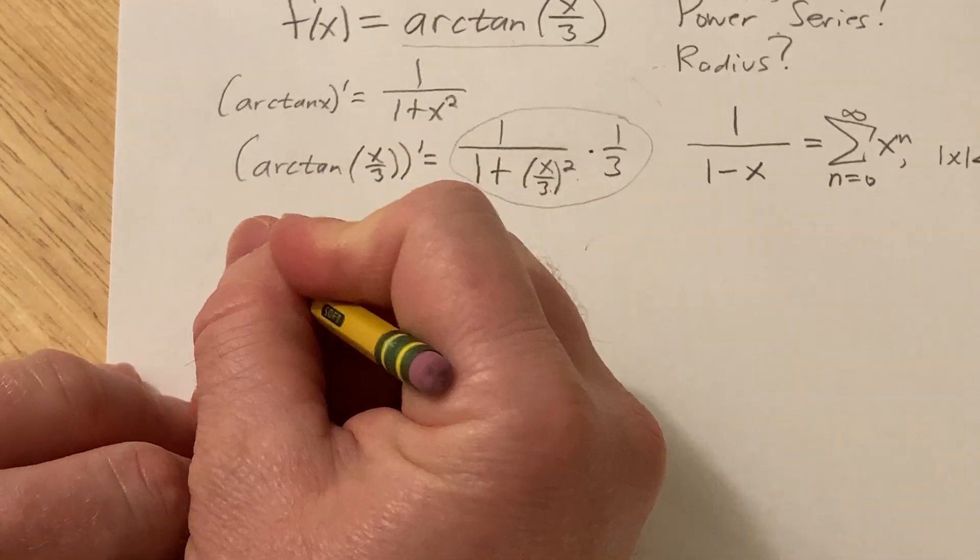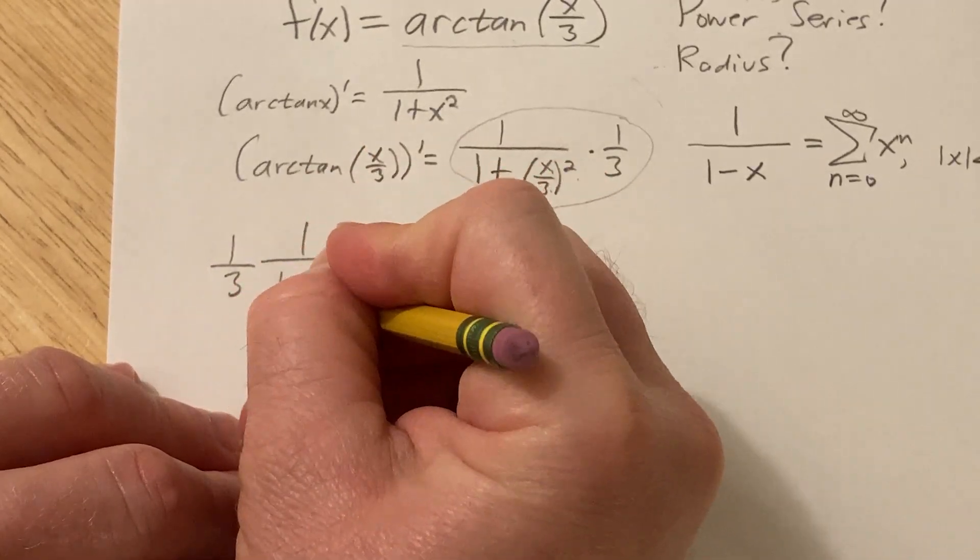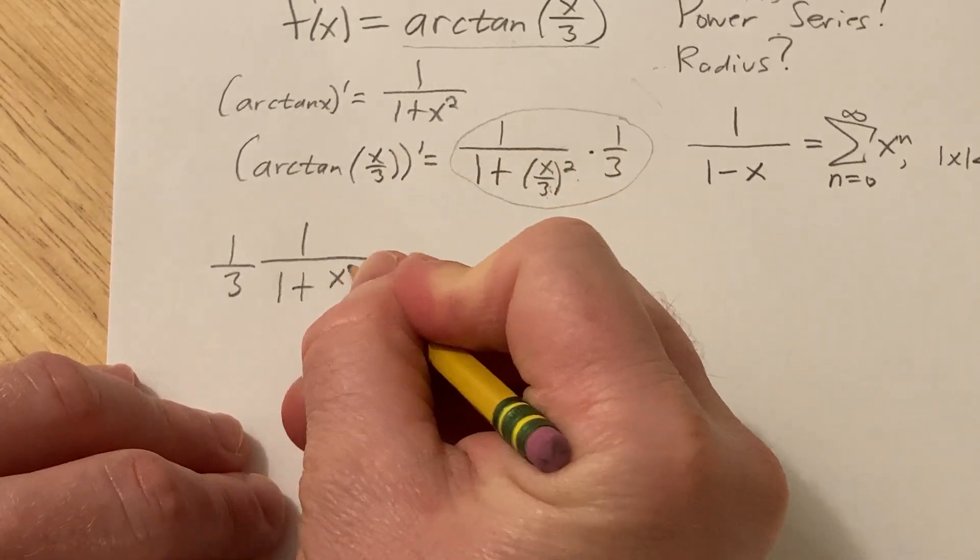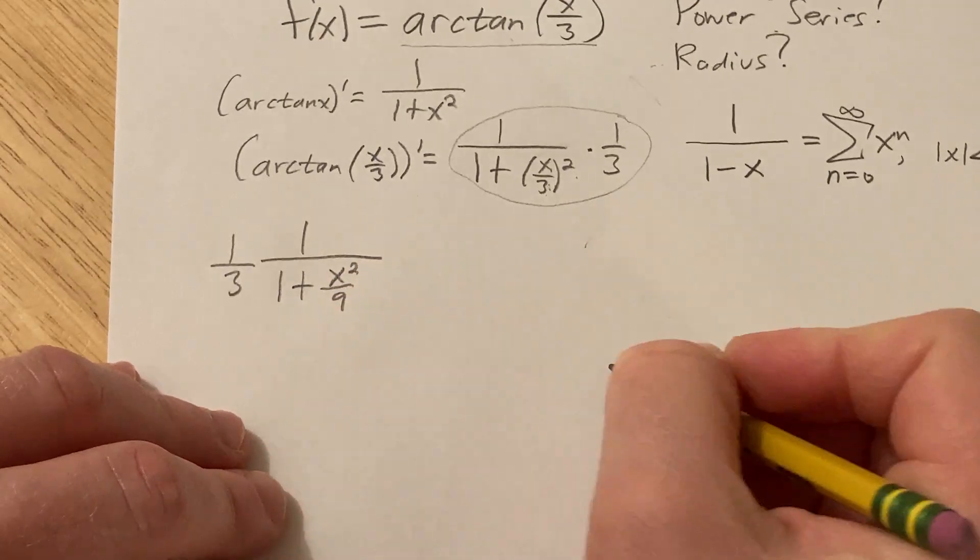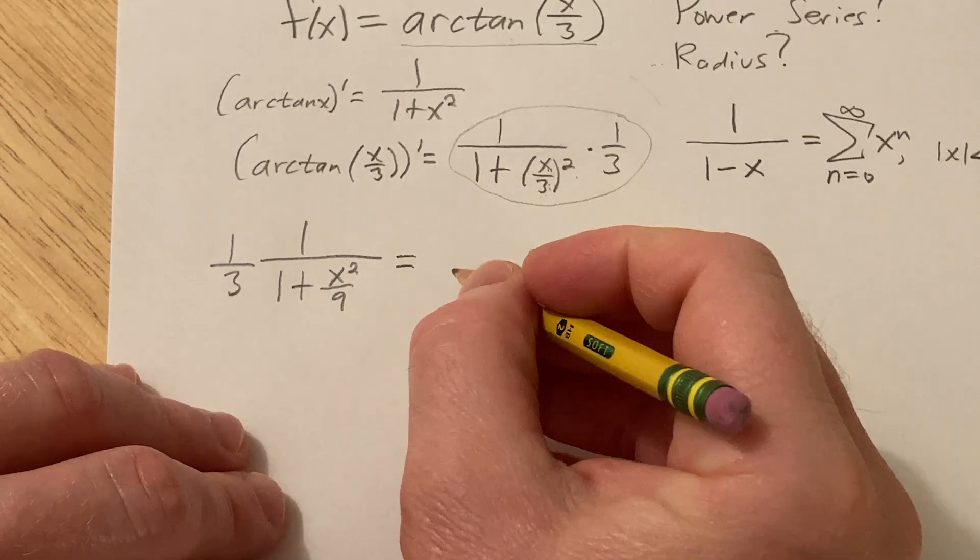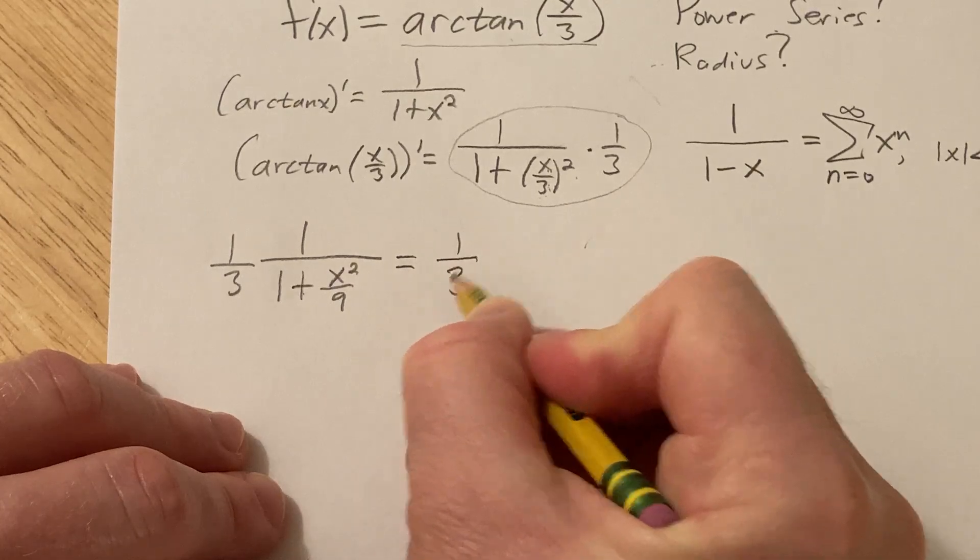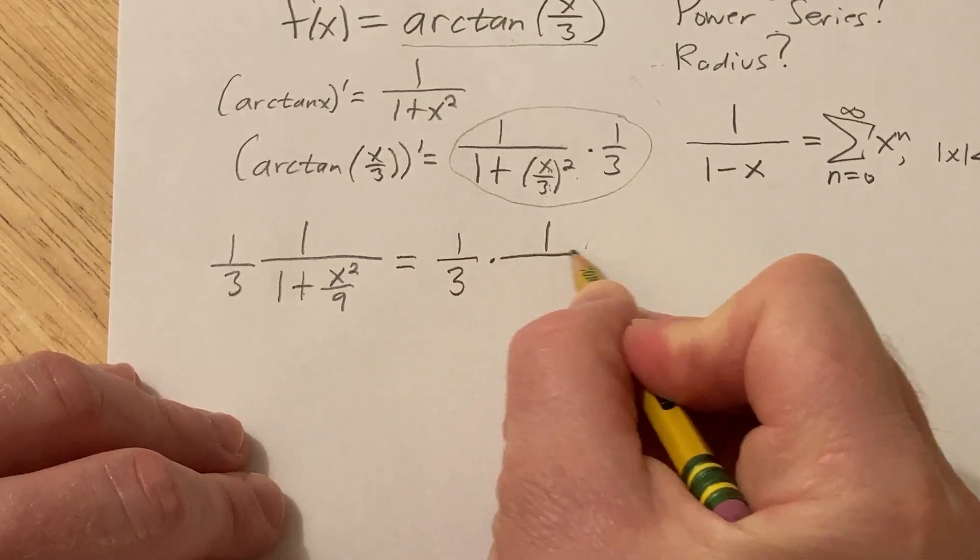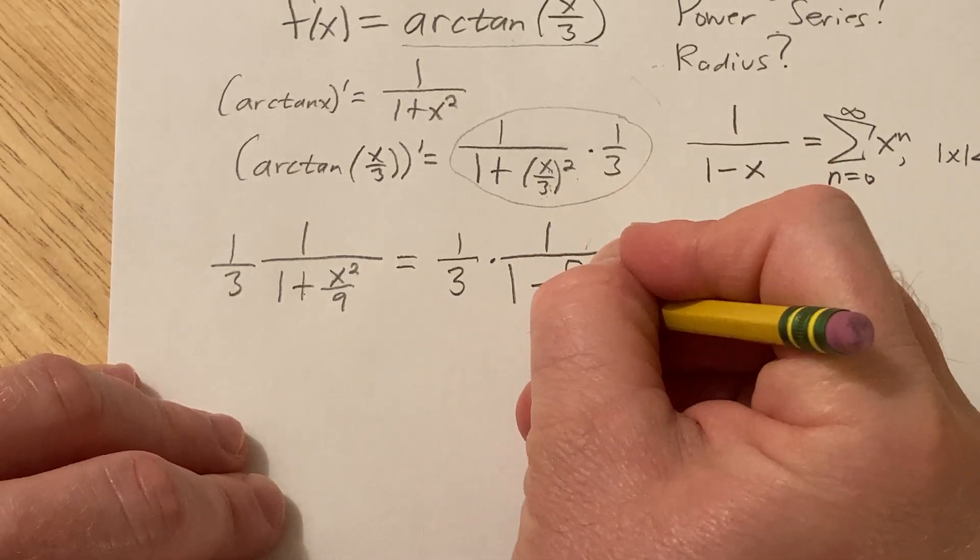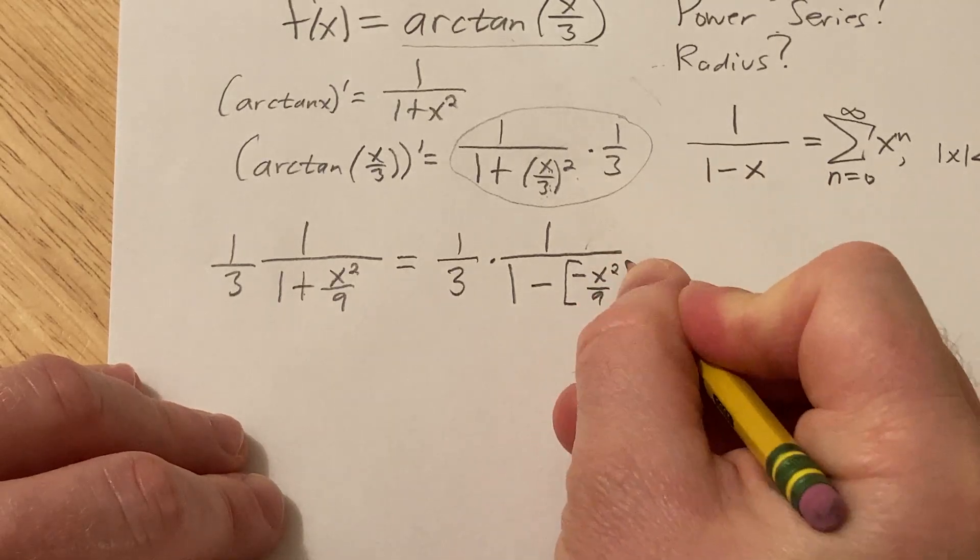So we're going to apply this formula to this and then we'll integrate and we'll get this back and we should be good. So I'm going to go ahead and write this down again. So it's 1 third, 1 over 1 plus, I'm going to go ahead and write this as x squared over 9, just because it's just easier, right? You square the x, you square the 3. And now we need to use this formula. So we need a minus sign. So watch this. It's 1 third times 1 over, 1 minus, I'll use a bracket, negative x squared over 9. Boom, see that?